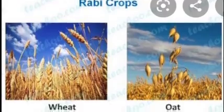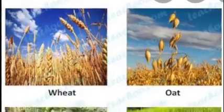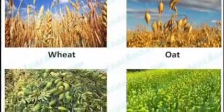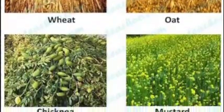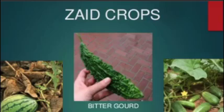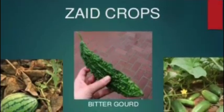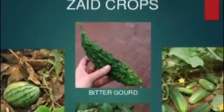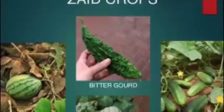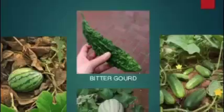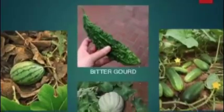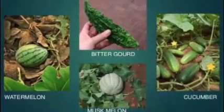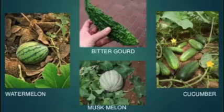Rabi crops grow in winter season, October to March. Example: wheat. Zaid crops are grown in a short time, between the end of one season and the beginning of another season. They do not depend on climate. Examples: cucumber, pumpkin.